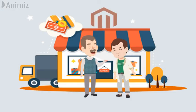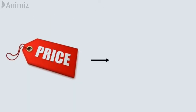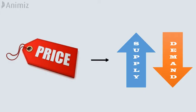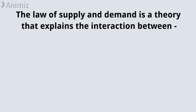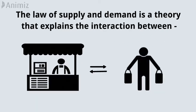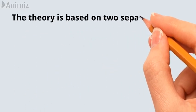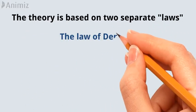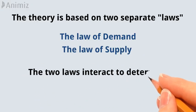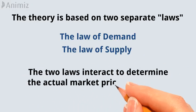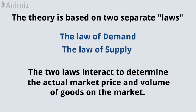In any market transaction between a seller and a buyer, the price of the good or service is determined by supply and demand in a market. The law of supply and demand is a theory that explains the interaction between the sellers of a resource and the buyers of that resource. The theory is based on two separate laws — the law of demand and the law of supply — which interact to determine the actual market price and volume of goods on the market.